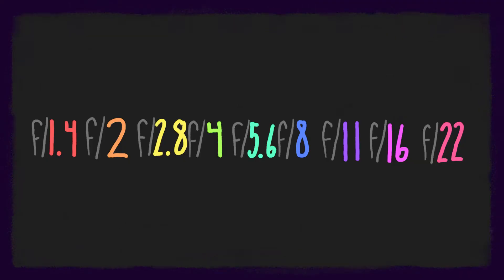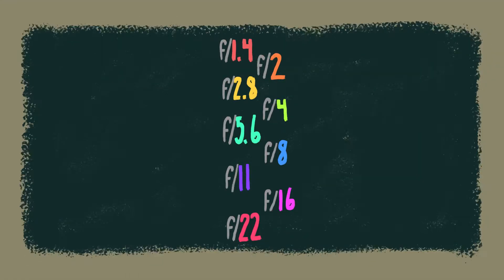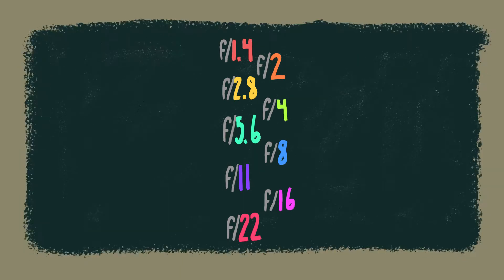I have some good news and I have some bad news. The bad news is you are expected to memorize this seemingly random list of numbers. But the good news is that there's an incredibly easy trick to do it. Let's take a look at this chart again. As it's laid out right now, it's not very easy to look at, so I'm just going to reorganize this list — and what I've basically done is take every other number and lay them out in a zigzag sort of fashion.